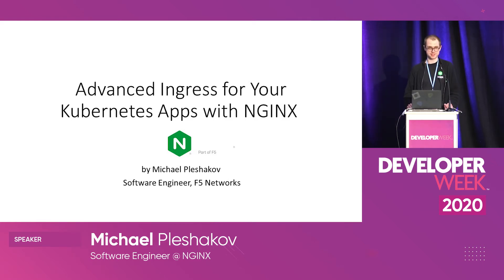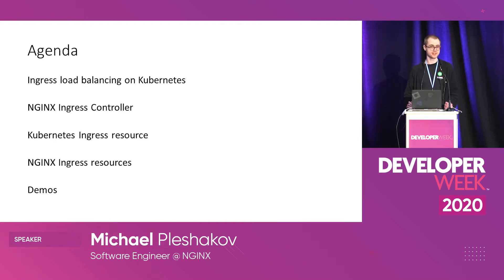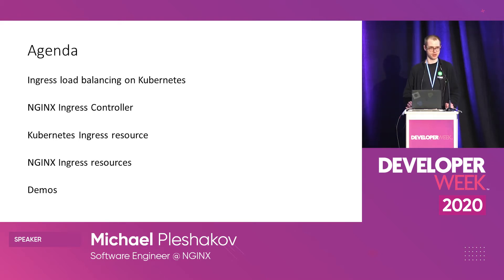Today I want to talk about advanced ingress for Kubernetes apps with NGINX. Here's our agenda: first I'll define the problem of ingress load balancing on Kubernetes, then present the solution — the ingress controller, specifically the NGINX ingress controller. I'll show you two ways to configure load balancing: using standard Kubernetes ingress resources, and using the custom resources we developed, the NGINX ingress resources. I'll compare both approaches and show demos throughout the talk.